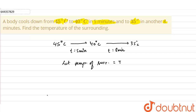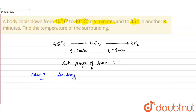Since the temperature difference is small, we will use Newton's Law of Cooling and work with the average temperature. In Case 1, when temperature decreases from 45°C to 40°C, the average temperature will be (45 + 40) / 2 = 42.5 degrees Celsius.